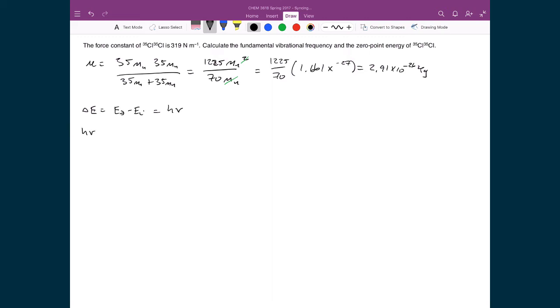So h nu equals—well, Ef equals h-bar times square root of k over mu times (1 + 1/2), because that's the energy of the first excited state. From that I'm going to subtract h-bar times square root of k over mu raised to the power of 1/2 times (0 + 1/2). That's the fundamental.